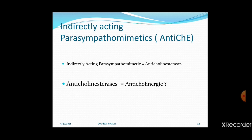Now we will discuss indirectly acting parasympathomimetic drugs, which are anti-cholinesterase drugs. They inhibit the cholinesterase enzyme so that acetylcholine becomes longer-acting and remains in the synaptic cleft for a longer time, acting upon both muscarinic and nicotinic receptors. Indirectly acting parasympathomimetic drugs are equivalent to anti-cholinesterase drugs.